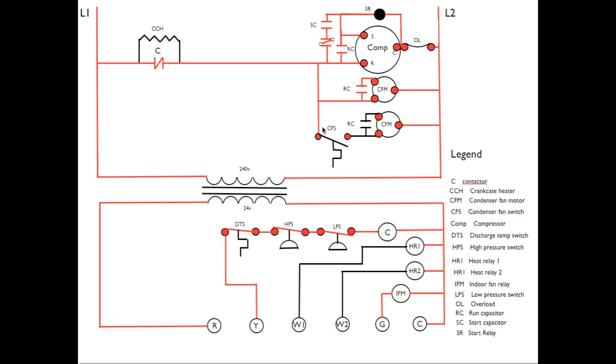Now, in this case, we're assuming CFS, or condenser fan switch, is open so the second condenser fan motor does not come on. Now here it gets a little more complicated. We're going up to the compressor running through the run capacitor to start.